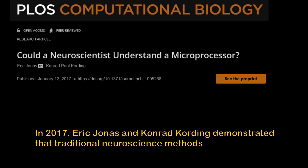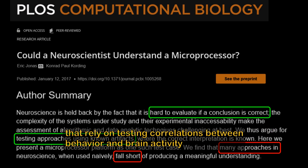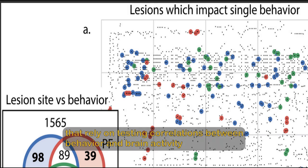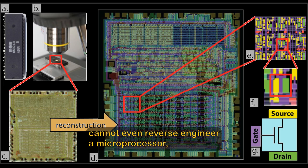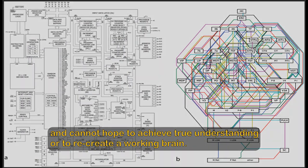In 2017, Eric Jonas and Conrad Cording demonstrated that traditional neuroscience methods that rely on testing correlations between behavior and brain activity cannot even reverse-engineer a microprocessor and cannot hope to achieve true understanding or to recreate a working brain.